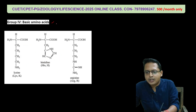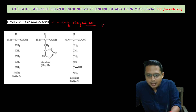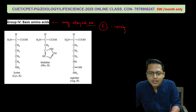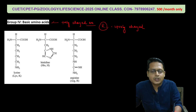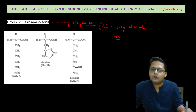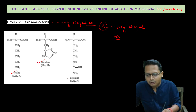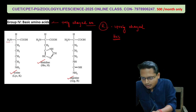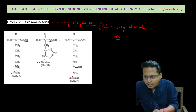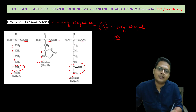The last category is basic amino acids, which are positively charged amino acids. It means the R groups carry positively charged molecules — extra amino groups. Examples are lysine, histidine, and arginine. These have a common structure but carry an extra amino group in the R group, making them positively charged amino acids.